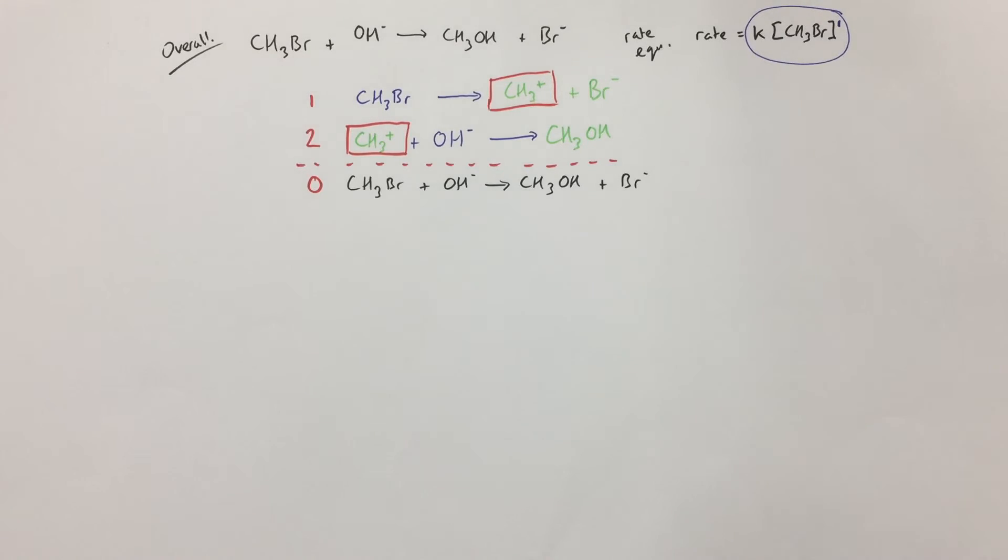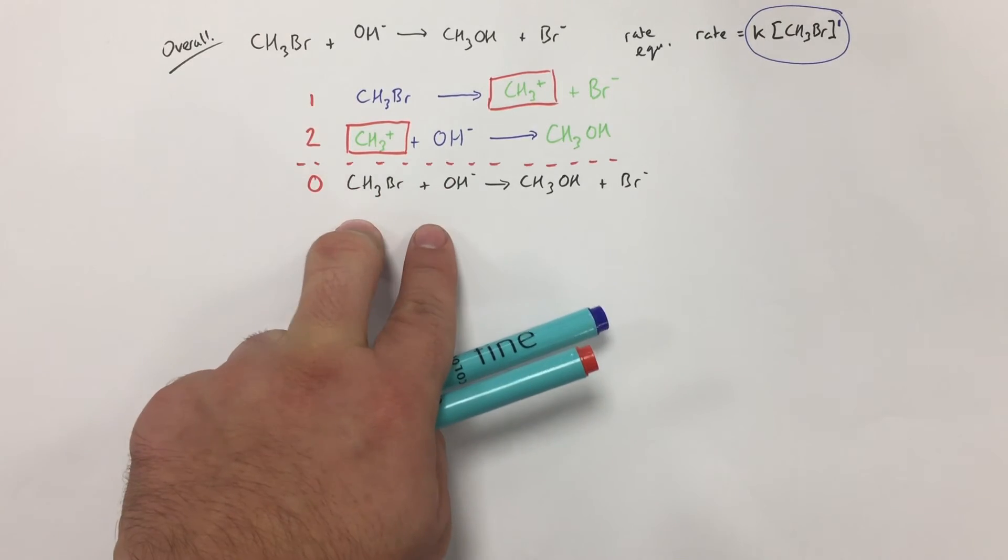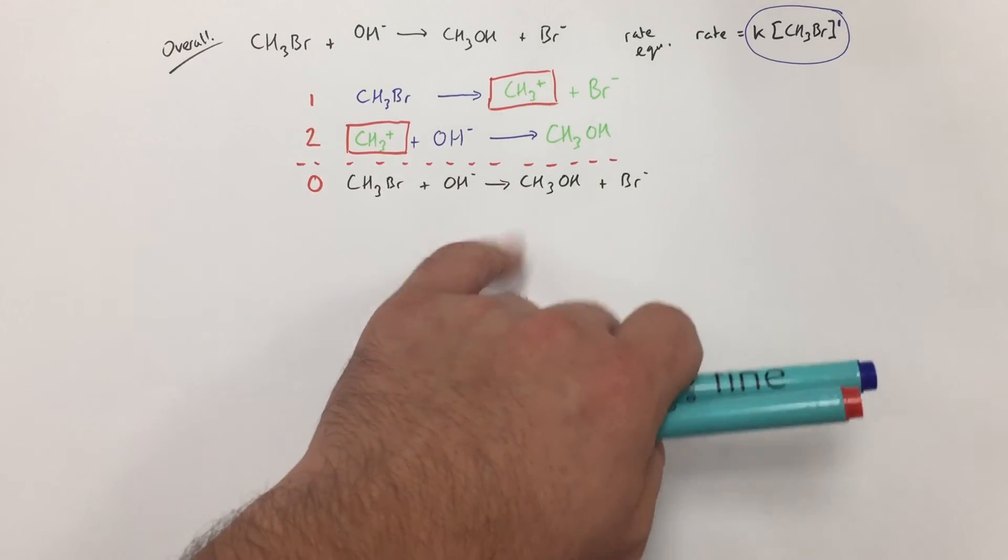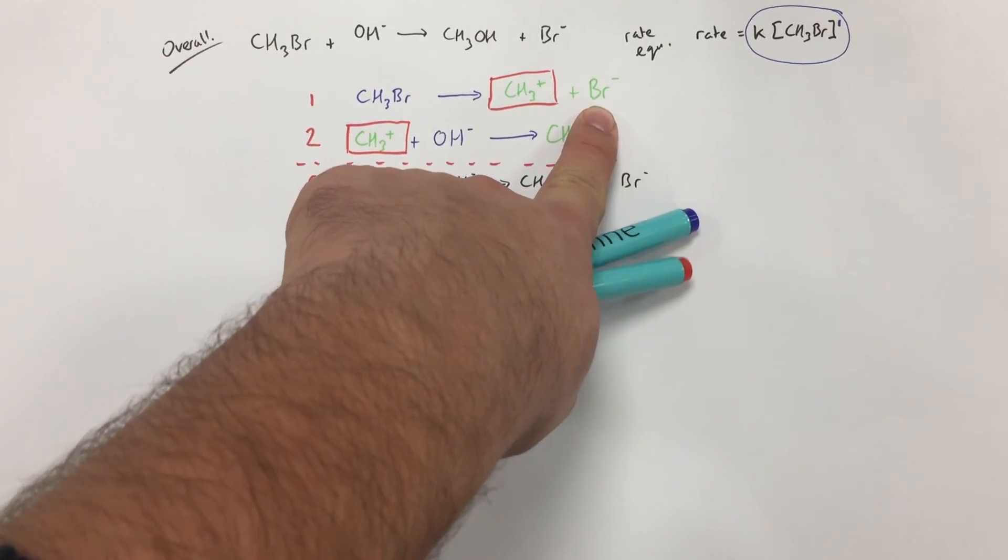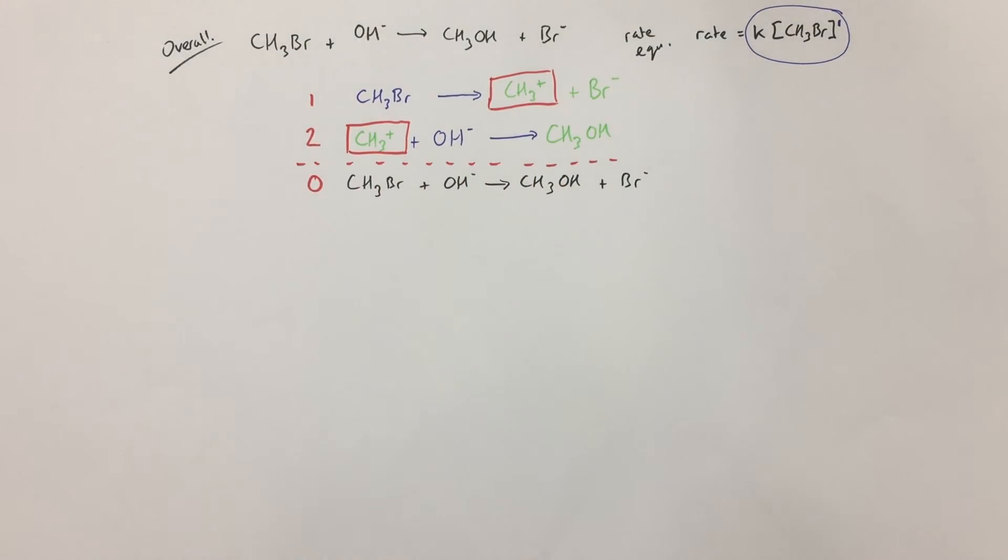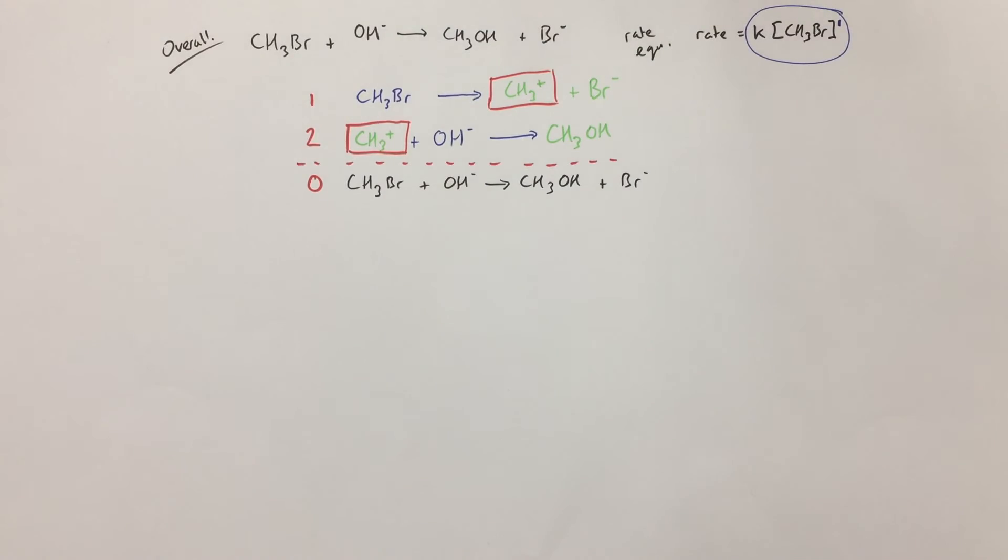If we check this now, we can see that overall two things are added—one mole of each, bromomethane and hydroxide ion—and two products are produced: methanol and the bromide ion. Our intermediate is produced in the first step and used up in the second step.